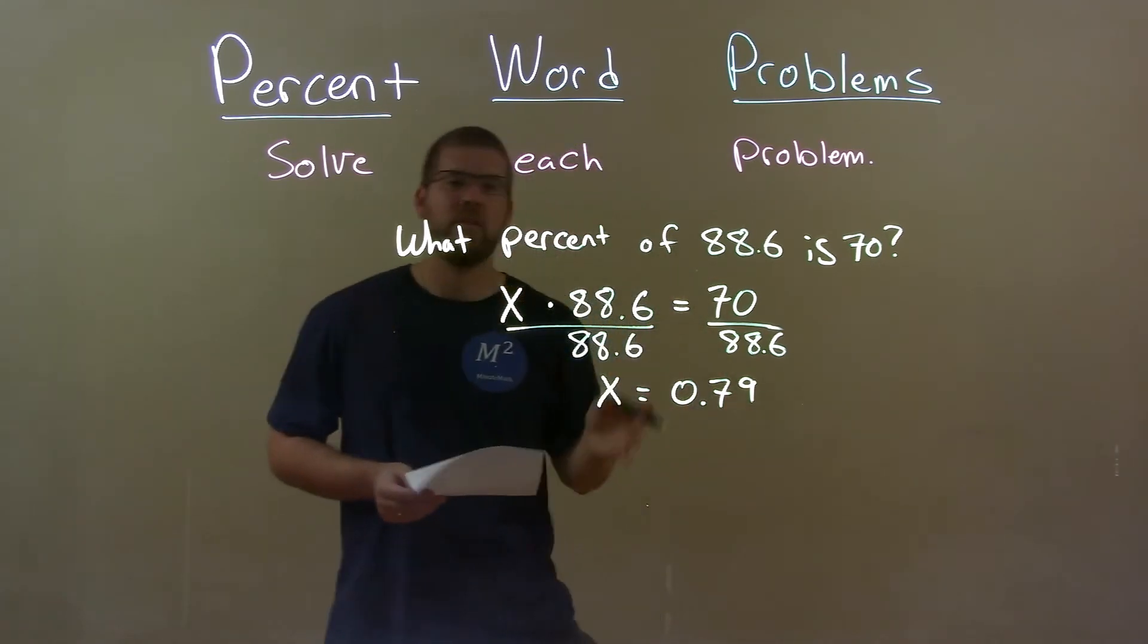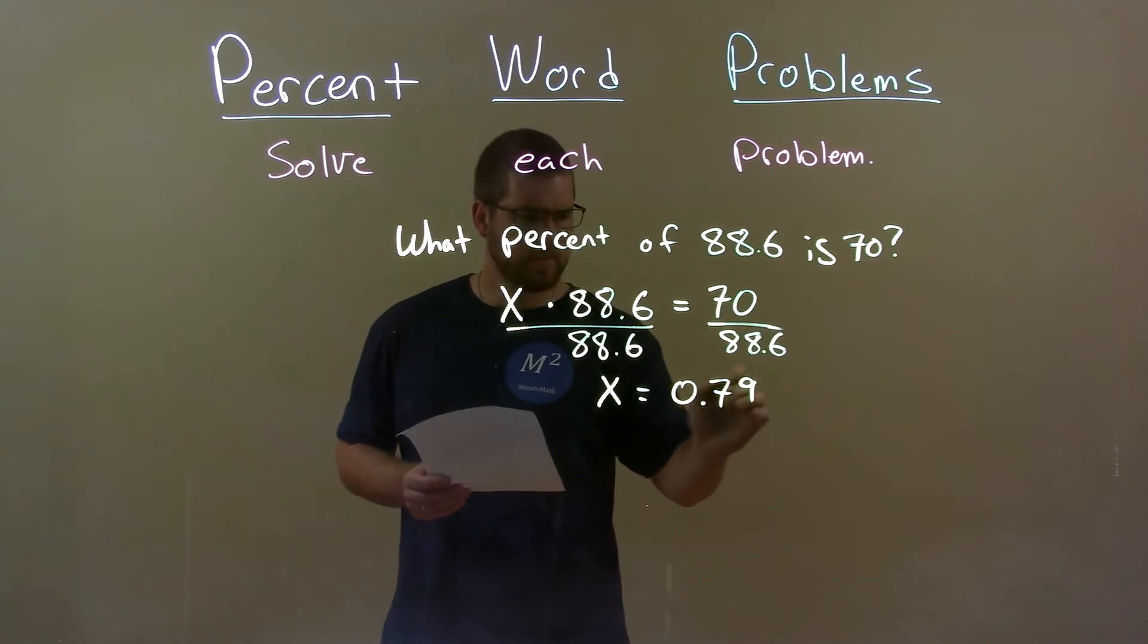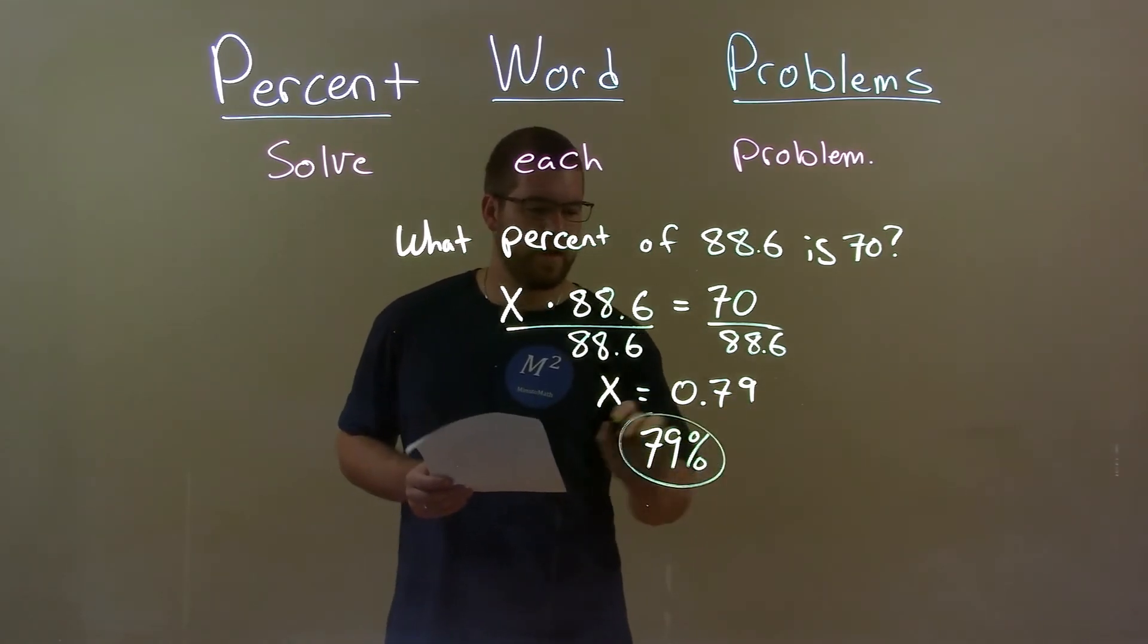Now we have to convert that to be a percent. Remember, x is our percent. So two decimal places to the right, I have 79% there. And there we have our final answer.